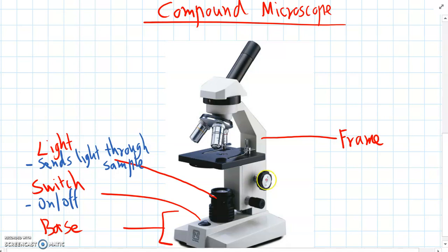And attached to the frame we've got a couple of other features. We've got two knobs here. Sometimes they're joined into one. But here the bigger one, this is the coarse focus.